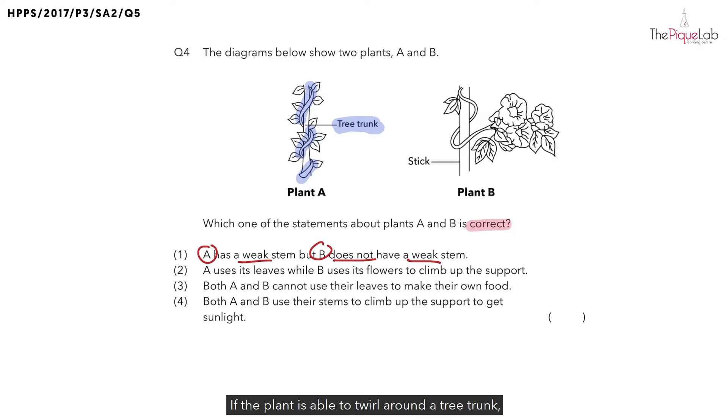Let me give you a hint. If the plant is able to twirl around a tree trunk, does it have a strong stem or a weak stem? This suggests to us that it has a weak stem. So those plants that you usually observe that twirl around another object or a tree trunk are actually plants with weak stem.